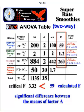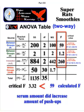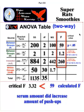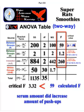Therefore we can say that there was a significant difference between the means of factor A. In other words, there was something different going on between the different levels of the serum drug. So the serum amount did in fact increase the amount of push-ups these rats were doing.